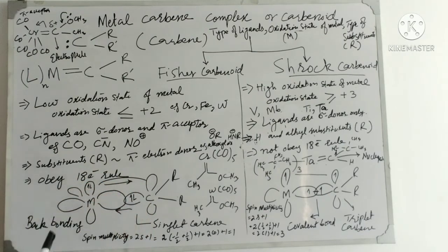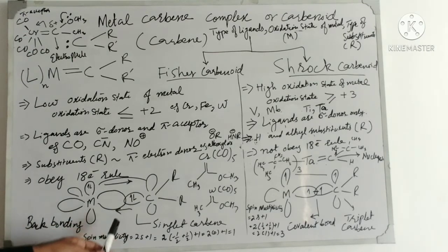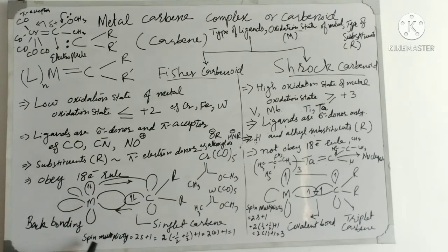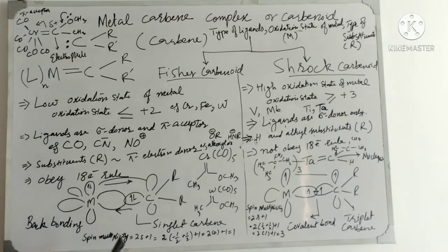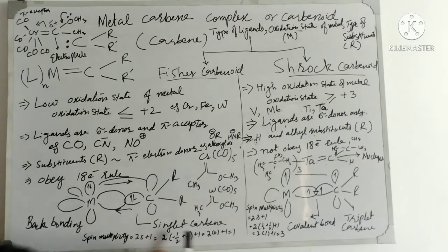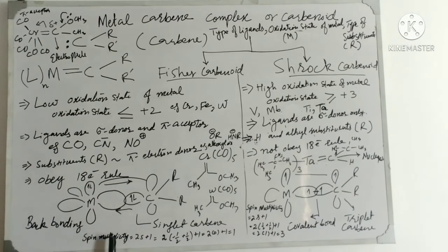This is how the electrons flow. For spin multiplicity, we use the formula 2S + 1, where S is the spin quantum number. For one electron, the spin quantum number is negative one-half, and for the other, it is positive one-half. Adding these gives S = 0, and the spin multiplicity is 1. That is why the singlet carbene has a spin multiplicity of 1.